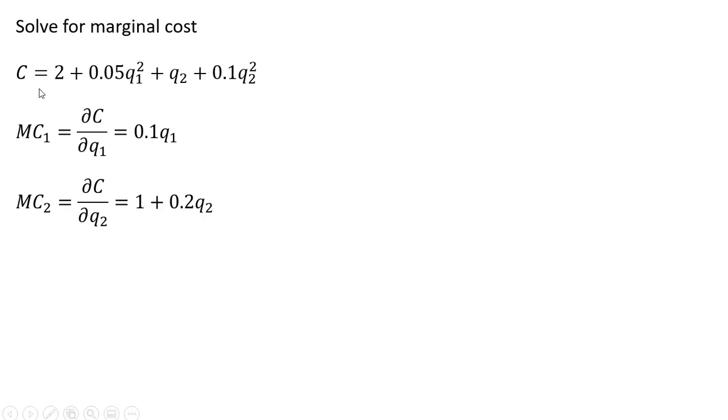The partial derivative of the cost equation with respect to Good 2 gives us the marginal cost of Good 2. This 2 is treated as constant, that's zero. This Q subscript 1 term is also treated as constant, so the partial derivative of a constant is zero. The partial derivative of Q subscript 2 is just one. And the partial derivative of our last term, the exponent on the Q subscript 2 term comes down in front. So 2 times 0.1 is 0.2. Subtracting 1 from that exponent just leaves us with Q subscript 2.